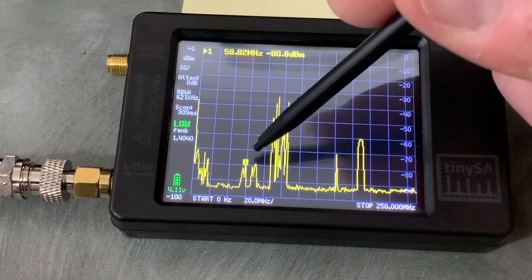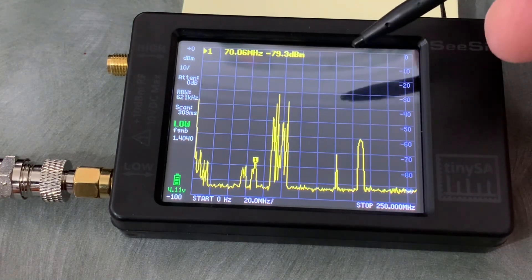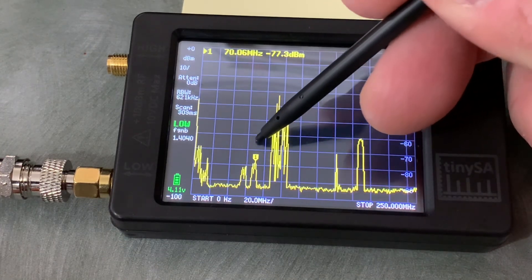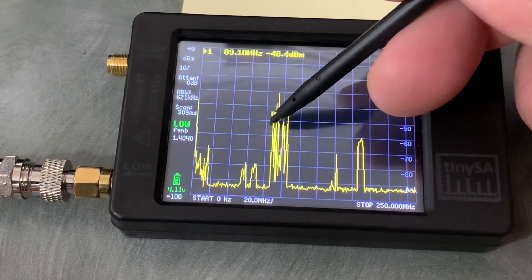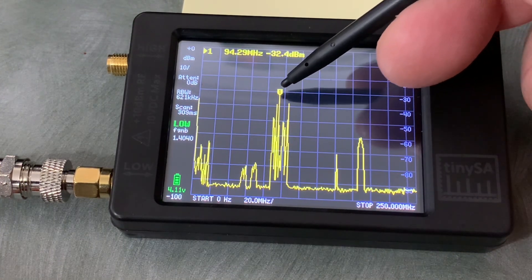This is RF channel 4, CHFD, another over-the-air TV station. And then these large peaks here, these are the FM radio stations in my area.